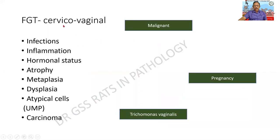What can be the use of cervical or cervico-vaginal cytology? It can be study of infections — non-specific or specific. Inflammation. Hormonal status — whether the patient is in the oestrogen phase, progesterone phase, or in the atrophic phase. Metaplasia and dysplasia. Atypical cells — sometimes called cells with unknown malignant potential — or a frank carcinoma. I would like you to kindly prepare this list and retain it for the answer.